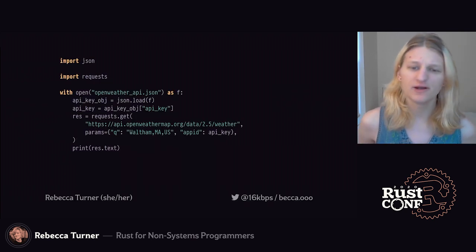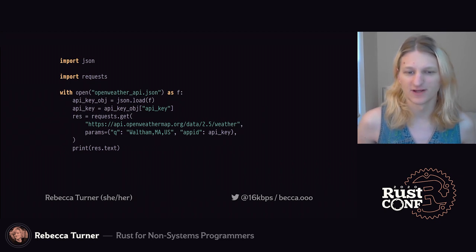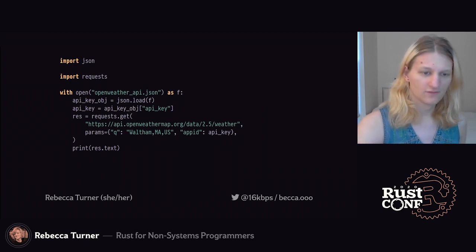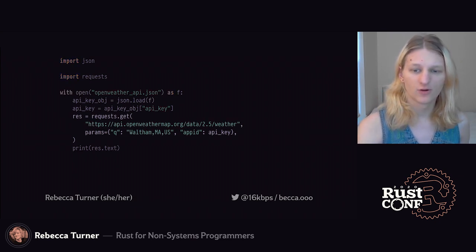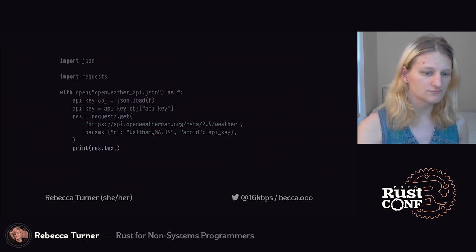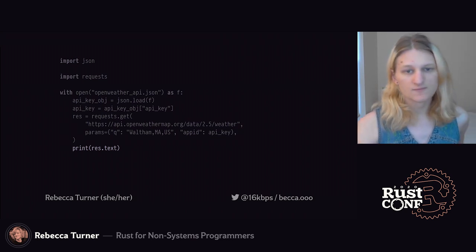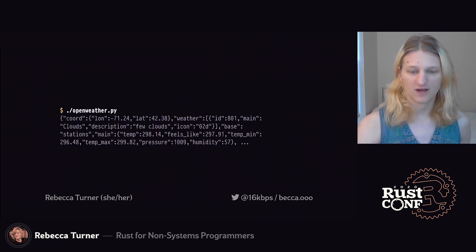Weather APIs come and go, but right now OpenWeather is providing decent data for free, even if the default units are Kelvins. Here's a simple call of their API in Python. First we load the API key from a JSON file, then we make a request, and finally we print out the response text. When we run it, we get a minified JSON blob as output. So let's work on recreating this in Rust.